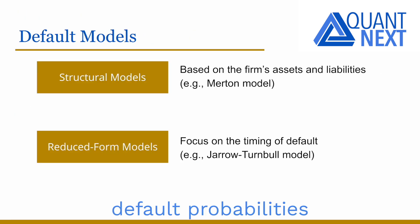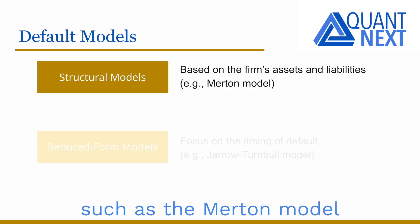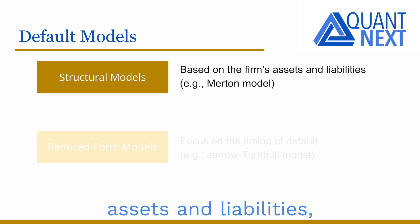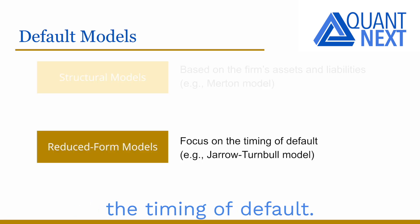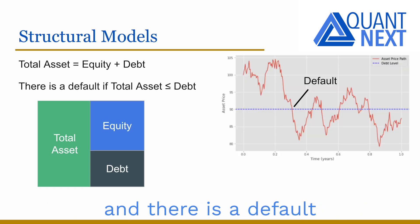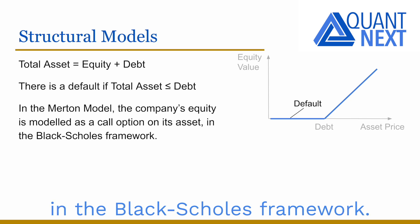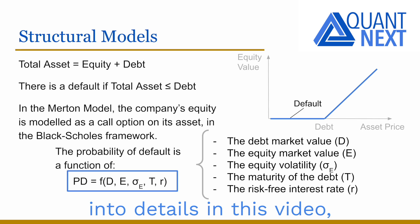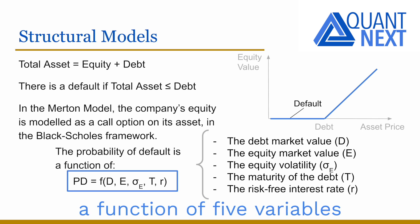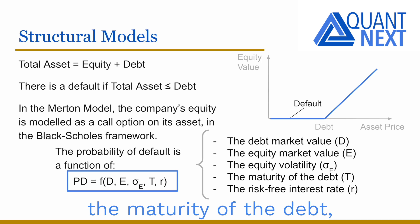In order to estimate default probabilities from market data, we need a default model. There are two main families. Structural models such as the Merton model are based on the firm's assets and liabilities, while reduced form models focus directly on the timing of default. In structural models, the total assets of a company equal the sum of its equity and its debt, and there is a default if the total assets go below the debt. In the Merton model, the company's equity is modeled as a call option on its assets, assuming the Black-Scholes framework. The probability of default is a function of five variables: the debt market value, the equity market value, the equity volatility, the maturity of the debt, and the risk-free interest rate.